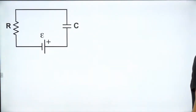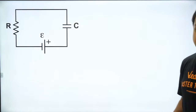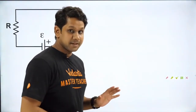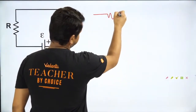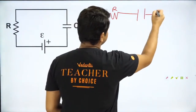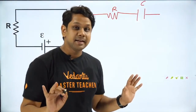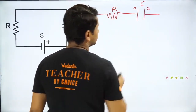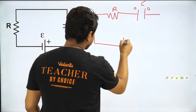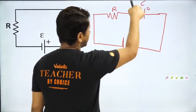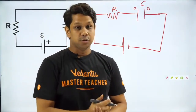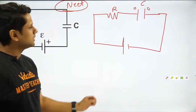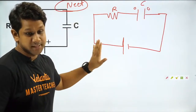Next topic is RC circuit. अब देखो बच्चो, RC circuit क्या होता है, इसके questions आपको कैसे solve करने होते हैं — यह मैं आपको समझाता हूँ। मान लीजिये आपके पास एक RC circuit है — this is a resistor and this is a capacitor. Initially इसको किसी भी battery से connect नहीं किया है, तो capacitor पे zero charge होगा। यह topic purely NEET का है — this is not there in your board syllabus। NEET में ही इससे questions expect किये जा सकते हैं।